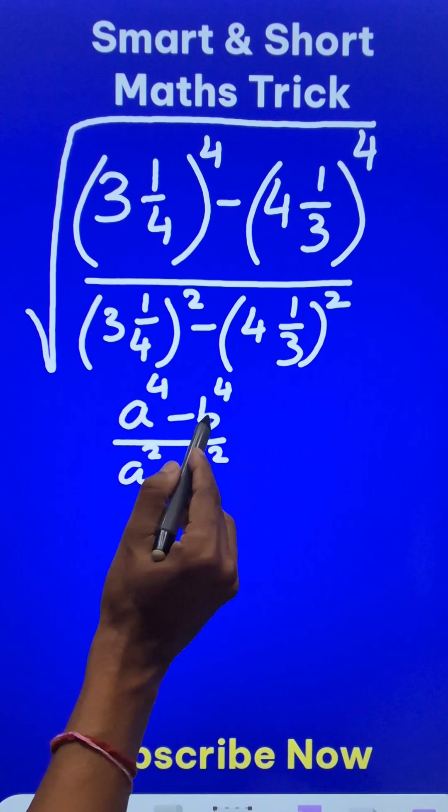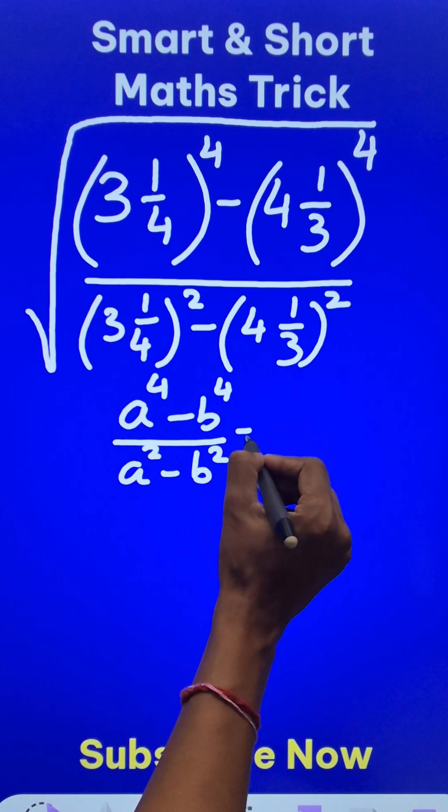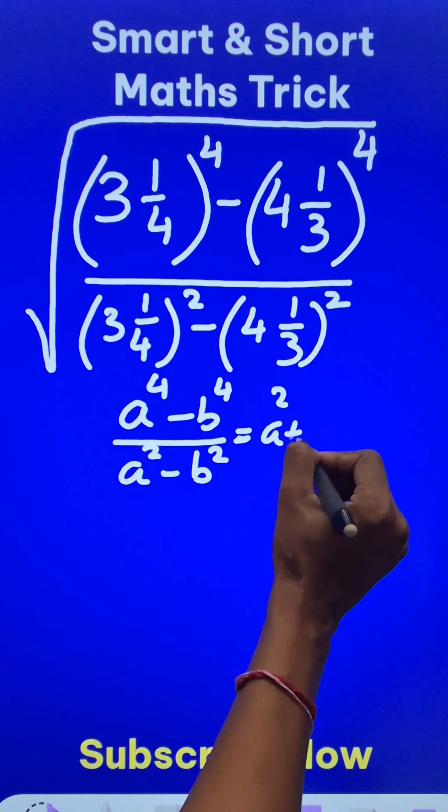Now, if you know the factors of a power 4 minus b power 4, one of these is a factor, so that factor gets cancelled and this reduces to a square plus b square.